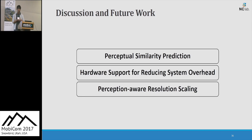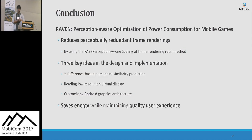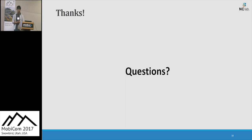I'm going to skip the discussion because of time limits. In conclusion, Laban reduces perceptually redundant frame renderings using the perception-aware scaling method, and we overcame technical challenges by developing three key ideas: Y-difference-based perceptual similarity prediction, reading a low-resolution virtual display, and customizing Android graphics architecture. We showed that Laban saves energy consumption on mobile games while maintaining quality user experience. Thank you for listening, and please feel free to ask any questions.